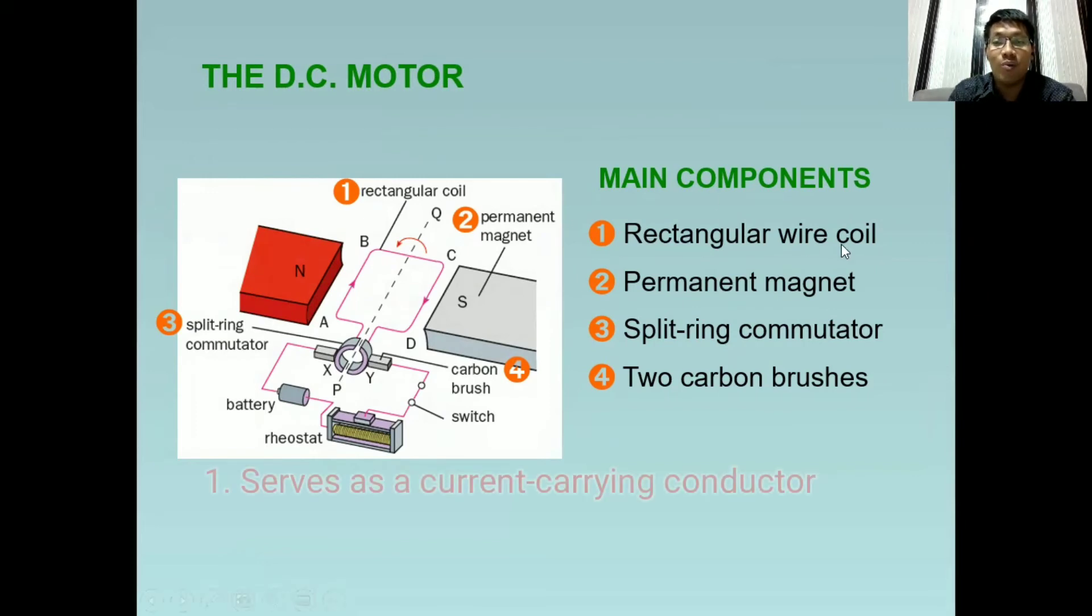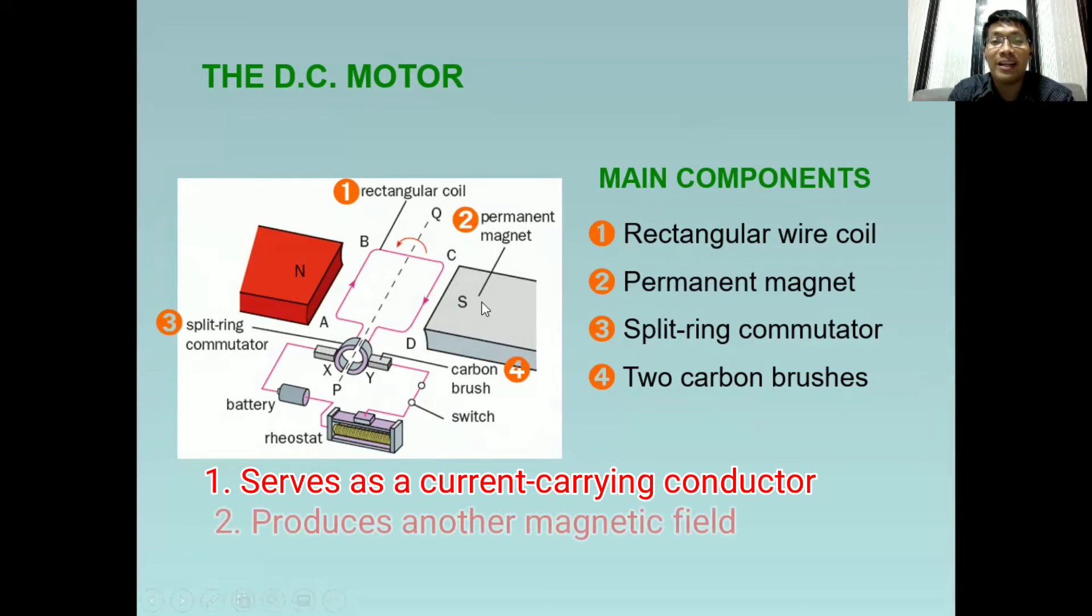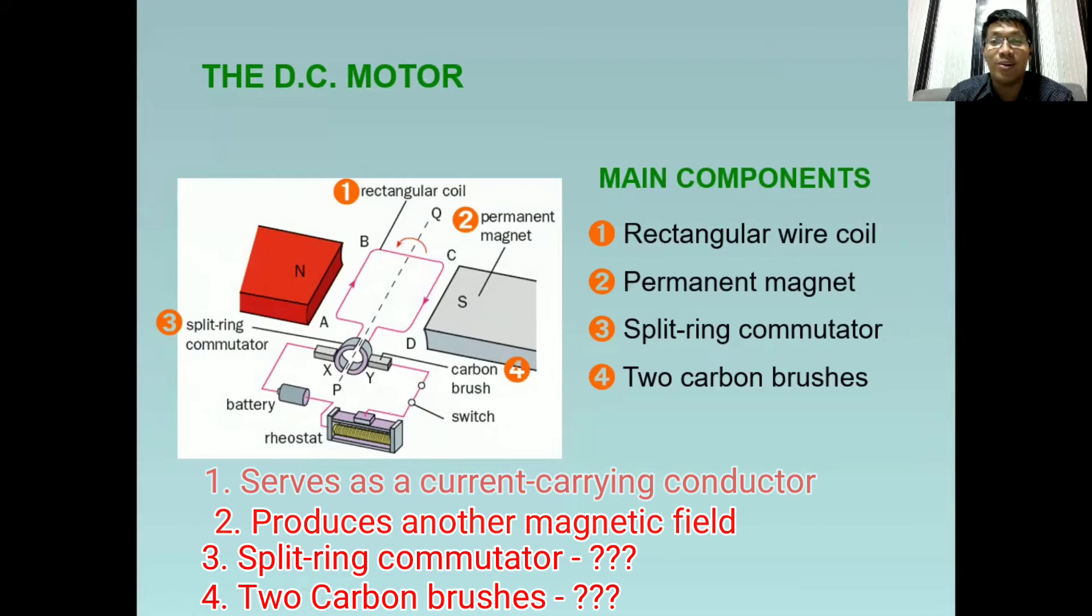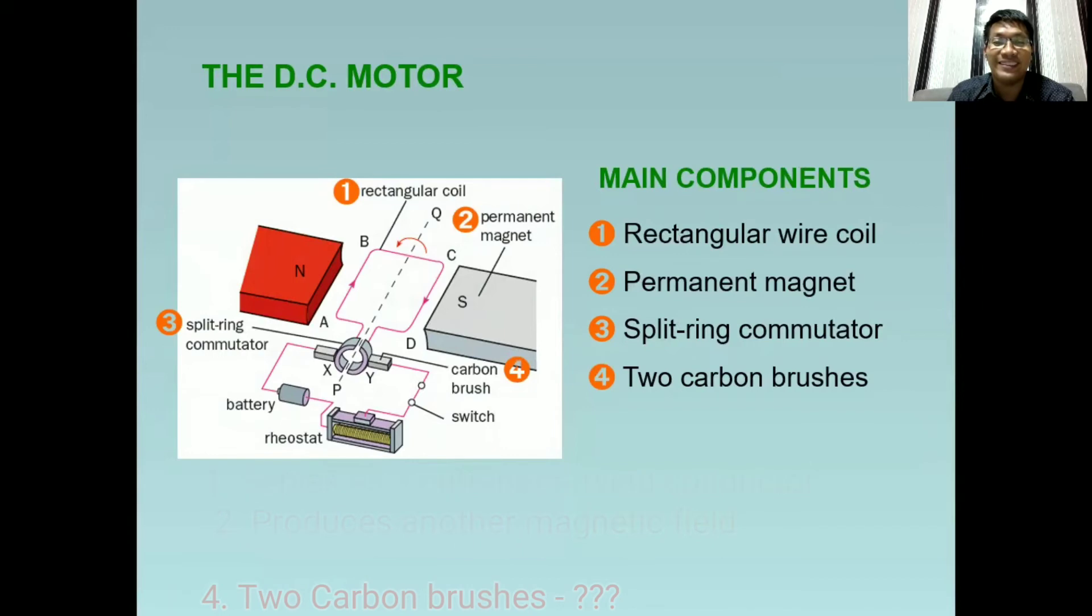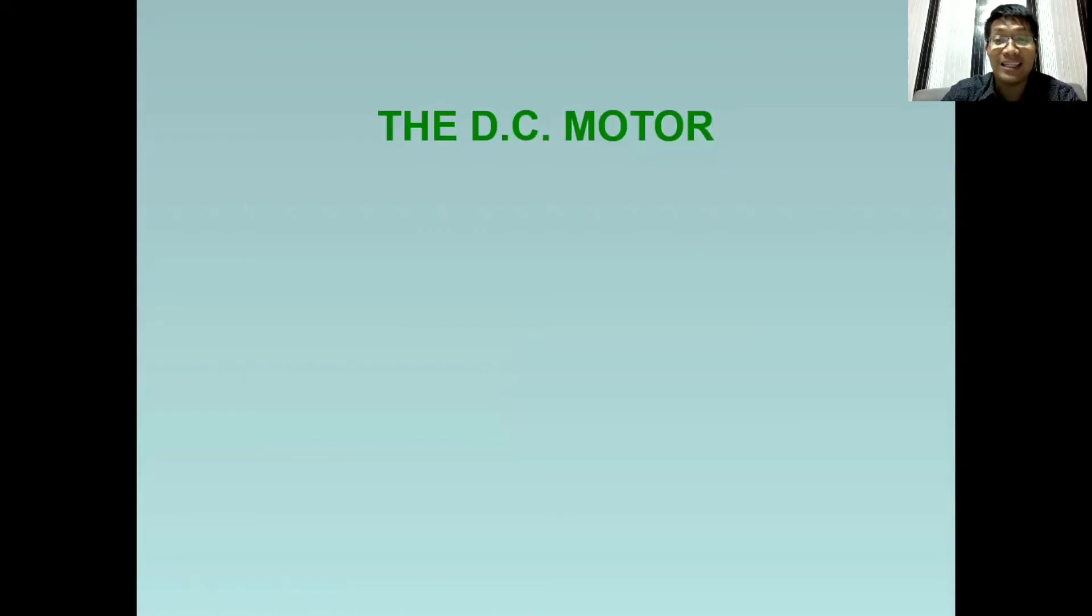What are the functions of these components? First, the rectangular wire coil serves as a passageway for current. When current passes through it, it will produce a magnetic field. Number two, the permanent magnet has a natural magnetic field. The two magnetic fields will interact. What is the function of split ring commutator and carbon brushes? Later we will explain.